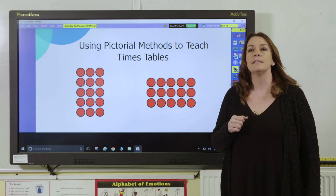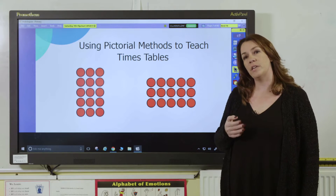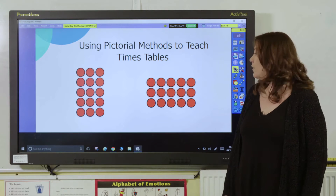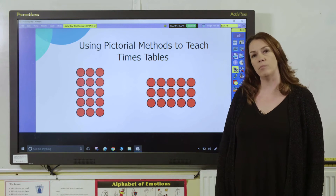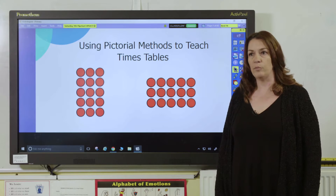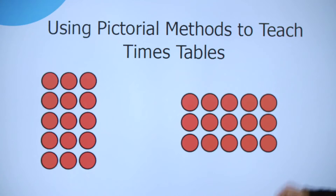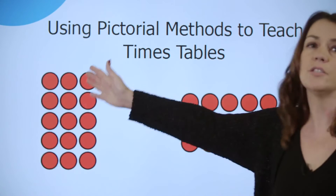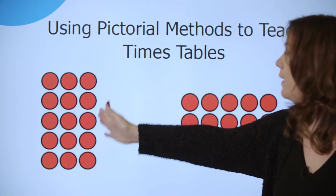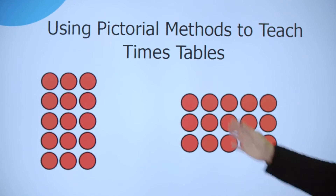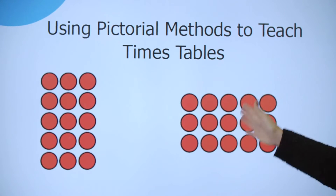Here I've got some arrays and I can use these two arrays to teach the five and the three times table. Begin by asking your pupils what do they represent, and you can have a discussion that this array represents three lots of five and this array represents five lots of three.